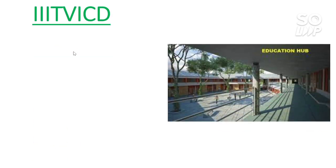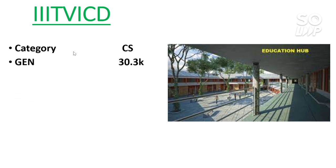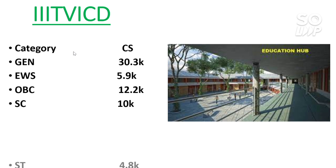Next is IIIT BICD — that is IIIT Vadodara International Campus Diu. This college also has only a CS branch. For General — 30,300. For EWS — 5,900. For OBC — 12,200. For SC — 10,000. For ST — 4,800. This concludes the cutoff data for all 26 IIITs — category-wise, male/female, and branch-wise.